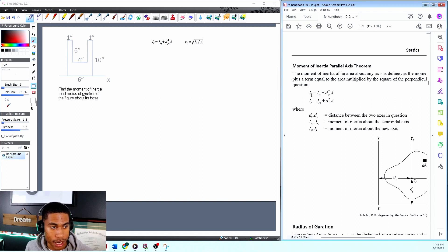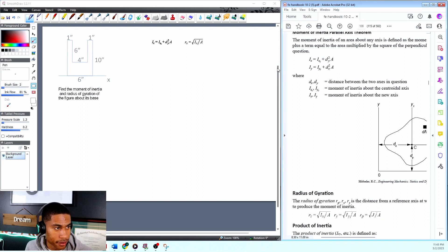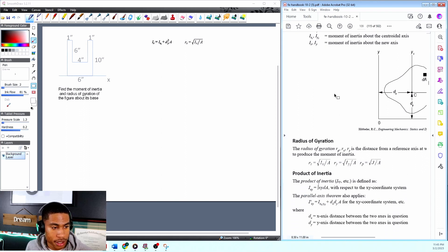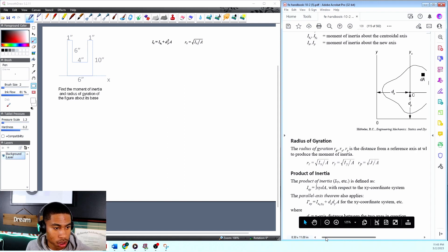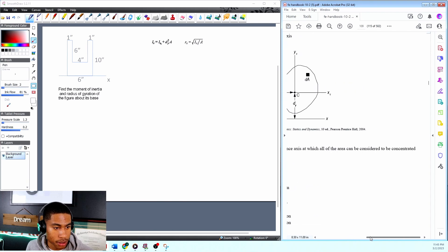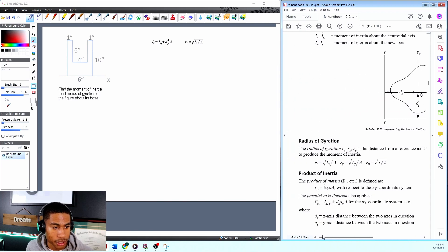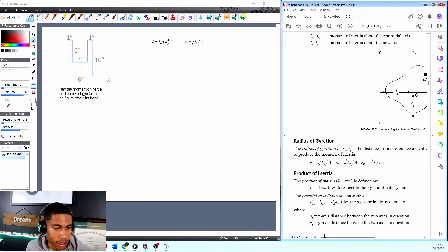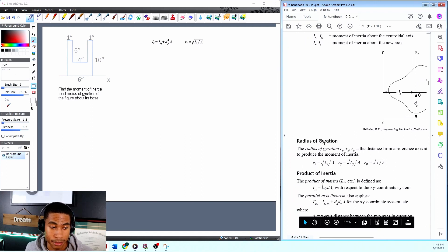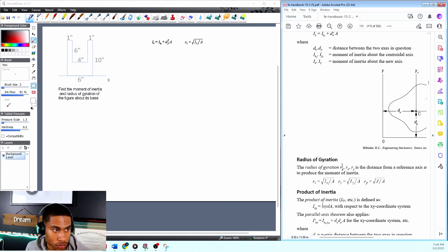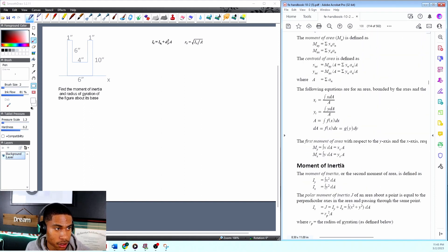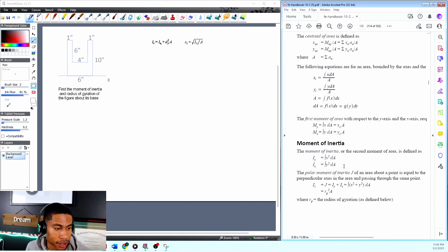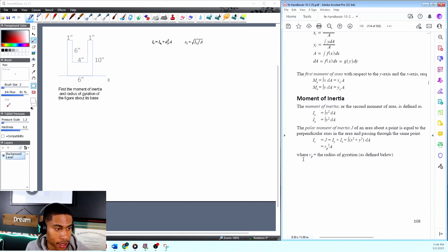Looking for ix or iy. It says find the moment of inertia and radius of gyration. I feel clear about moment of inertia. Radius of gyration: the distance from a reference axis at which the area can be considered to be concentrated to produce the moment of inertia. So it's just a distance in my eyes.